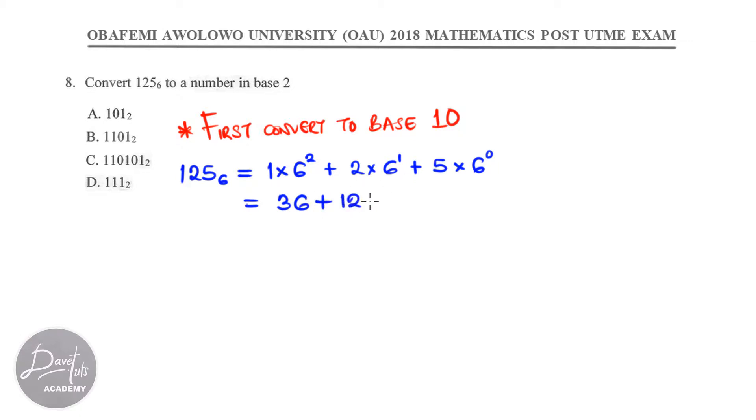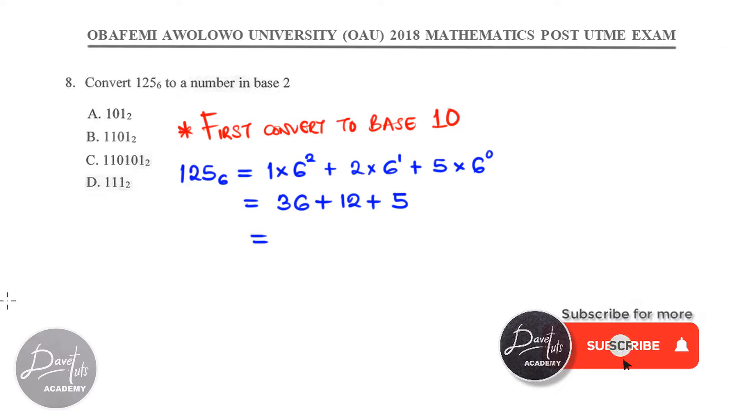So, 1 times 6 raised to power 2 is 36, 2 times 6 raised to power 1 is 12, 5 times 6 raised to power 0, any number raised to power 0 is 1. So, that will be 5 times 1, which is 5. 36 plus 12 plus 5 will be 48 plus 5, that will be 53. That will be 53 base 10.